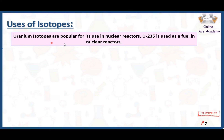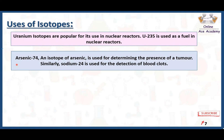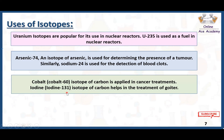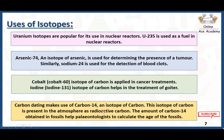Uses of isotopes: Uranium isotopes are popular for their use in nuclear reactors. Uranium-235 is used as a fuel in nuclear reactors. In the medical field, arsenic-74 is used to determine the presence of a tumor in the human body, and sodium-24 is used for the detection of blood clots. Cobalt-60 is applied in cancer treatment, and iodine-131 helps in the treatment of goiter. Carbon dating uses carbon-14, an isotope of carbon, to calculate the age of fossil fuels.